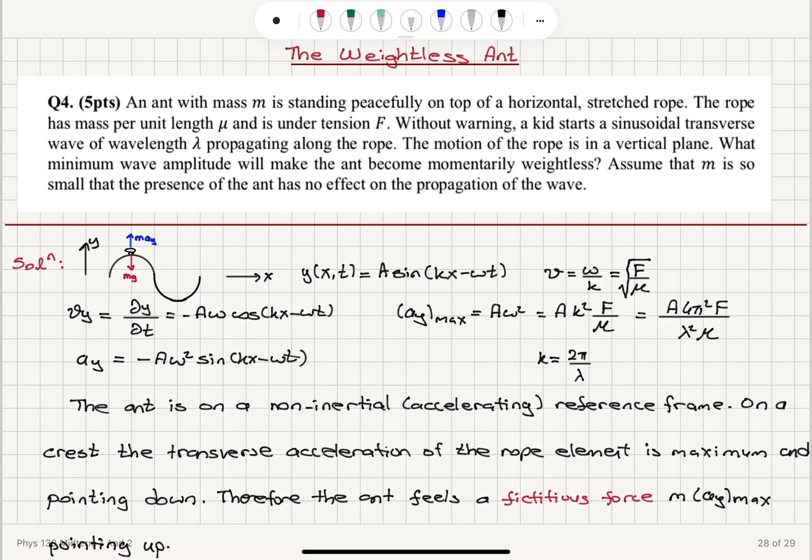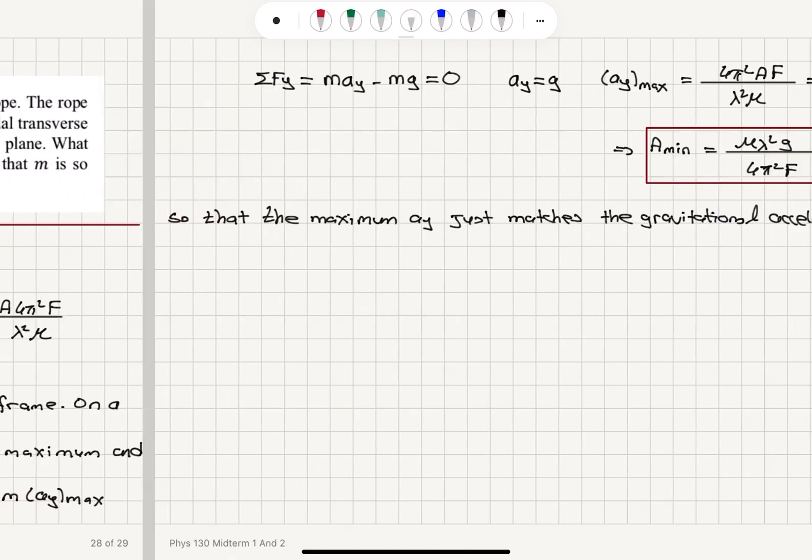So the ant is on this non-inertial accelerating reference frame on a crest. The transverse acceleration of the rope element is maximum and pointing down. Therefore, the ant feels a fictitious force pointing up, which has its maximum value, m ay max.